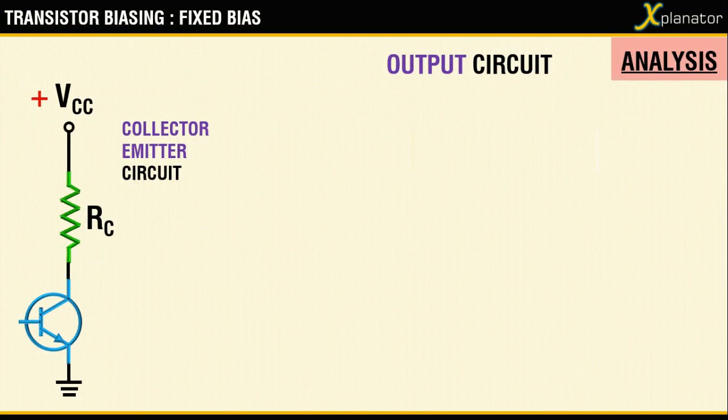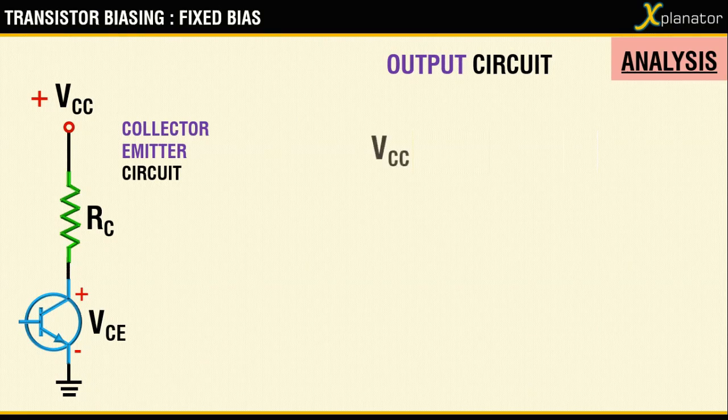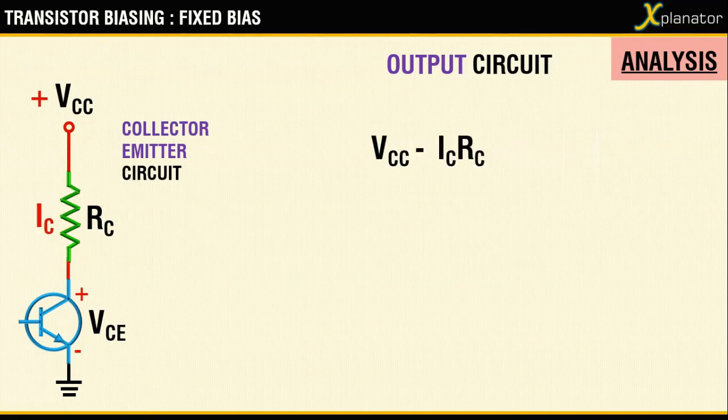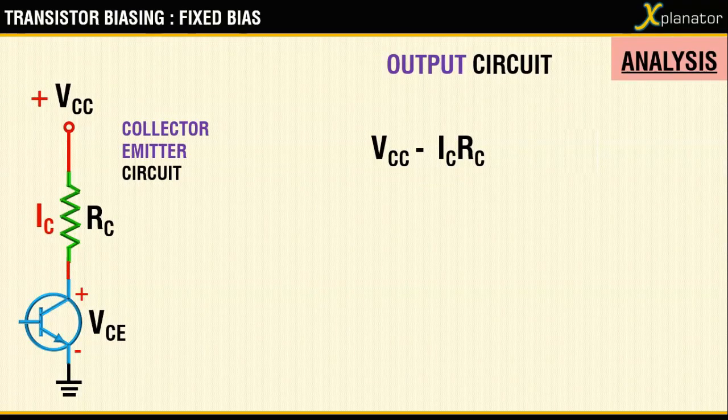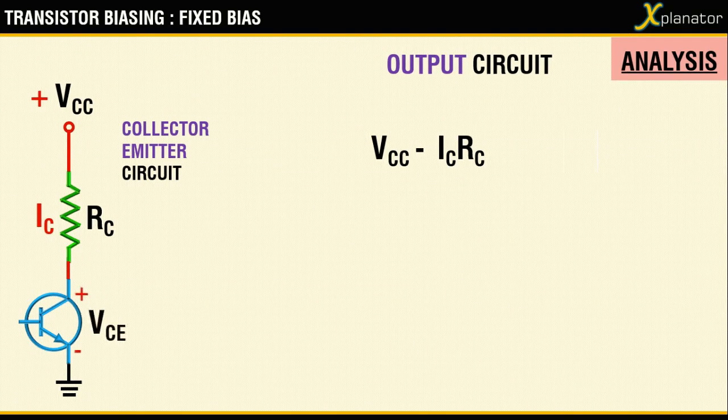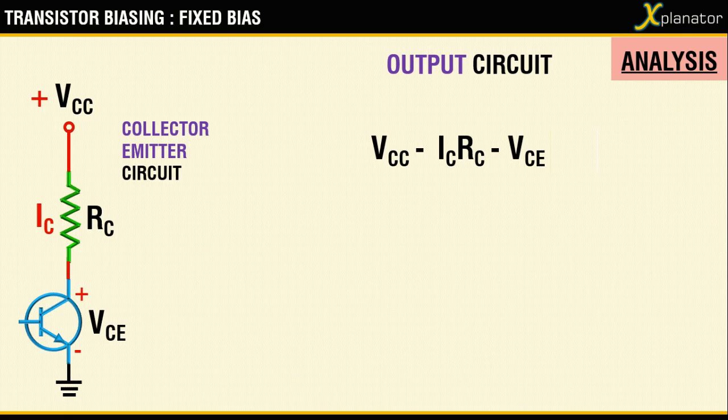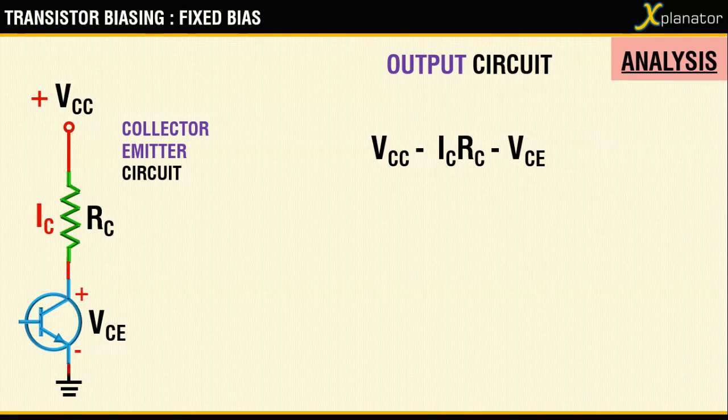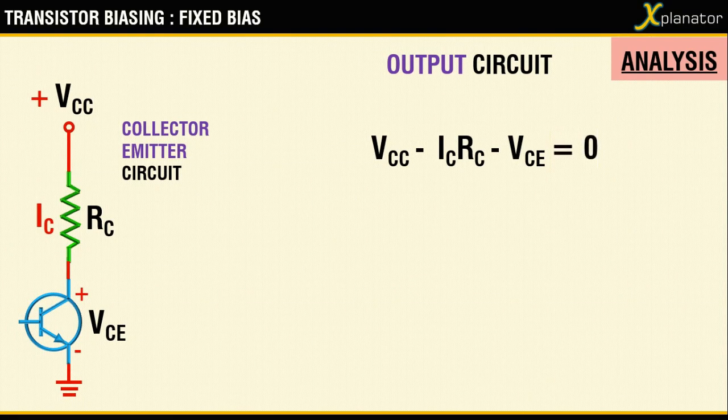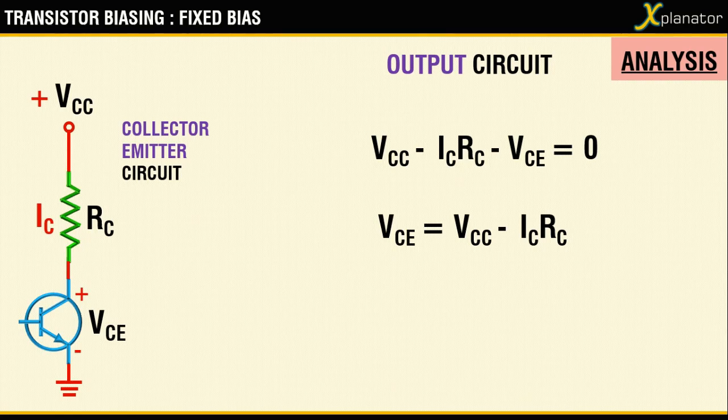Considering the output circuit, when you write a KVL for that, you will get a plus VCC minus IC·RC because of the current that goes in the collector resistance, and a term minus VCE because of the voltage drop across collector-emitter, and equate the expression to zero. Rearranging the terms to get value for VCE, you will get it as VCC minus IC·RC. That is an expression for the second unknown quantity, that is VCE.